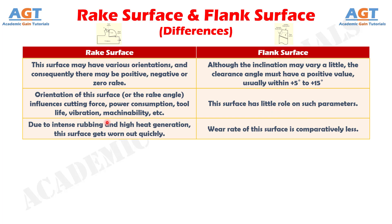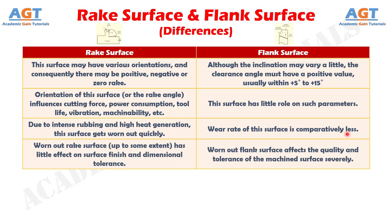Number eight: due to intense rubbing and high heat generation, rake surface gets worn out quickly, whereas the wear rate of flank surface is comparatively less. And difference number nine: worn-out rake surface, up to some extent, has little effect on surface finish and dimensional tolerance, whereas worn-out flank surface affects the quality and tolerance of the machined surface severely.